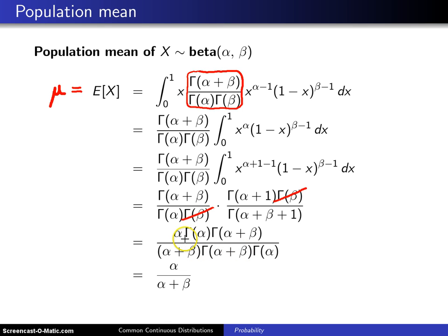When you do that, there is more to cancel. This gamma of alpha cancels with this one, gamma of alpha plus beta cancels with gamma of alpha plus beta, and you're just left with a very nice tractable mean that is alpha divided by alpha plus beta.